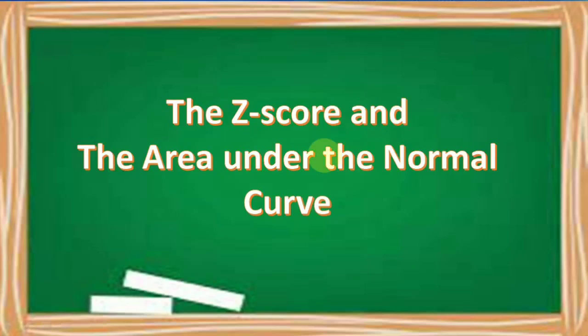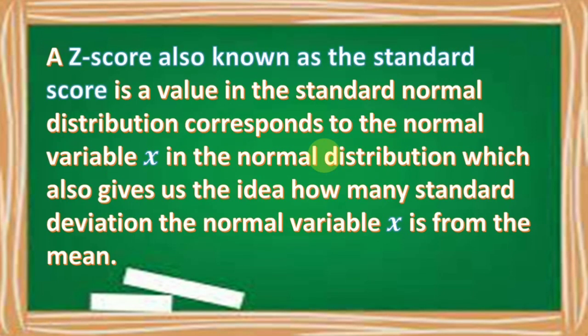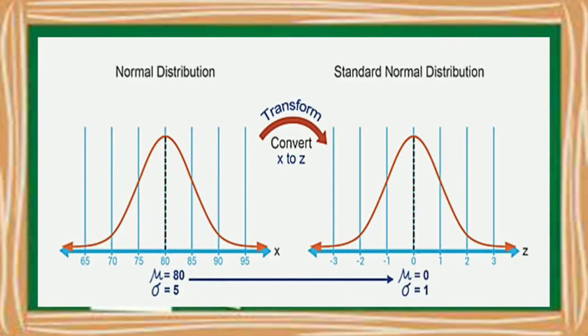We are going to discuss the z-score and the area under the normal curve, but let's start with the z-score. A z-score, also known as the standard score, is a value in the standard normal distribution that corresponds to the normal variable x in the normal distribution. It gives us the idea of how many standard deviations the normal variable x is from the mean. We can convert a normal variable x to a standard score or z-score in the standard normal distribution and vice versa.